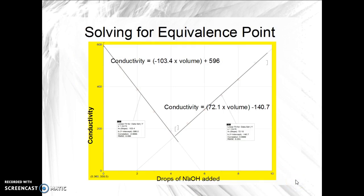We'll blow up the graph now and solve for the equivalence point. We got the slope off the graph and the y-intercept. So the conductivity here is equal to negative 103.4 times the volume plus the y-intercept 596. The conductivity on this line is 72.1 times the volume minus 140.7.